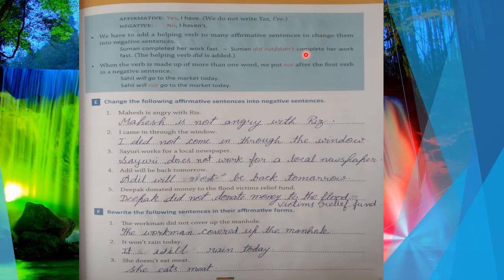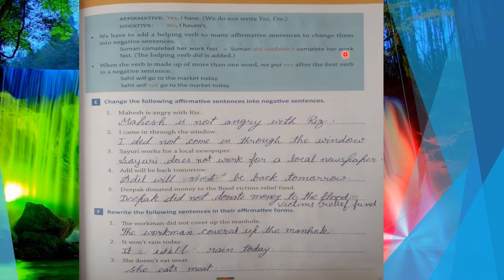If your example is in simple past tense and you have to change it from affirmative to negative, simply use 'didn't not'. The second form used was 'completed' — it changes to first form 'complete' because once you've used 'did', using the second form again would be wrong. So the answer is: 'Suman did not complete her work fast.'